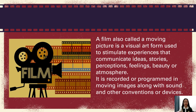Let's define what is a film. A film, also called a moving picture, is a visual art form used to stimulate experiences that communicate ideas, stories, perceptions, feelings, beauty, or atmosphere. It is recorded or programmed in moving images along with sound and other conventions or devices.